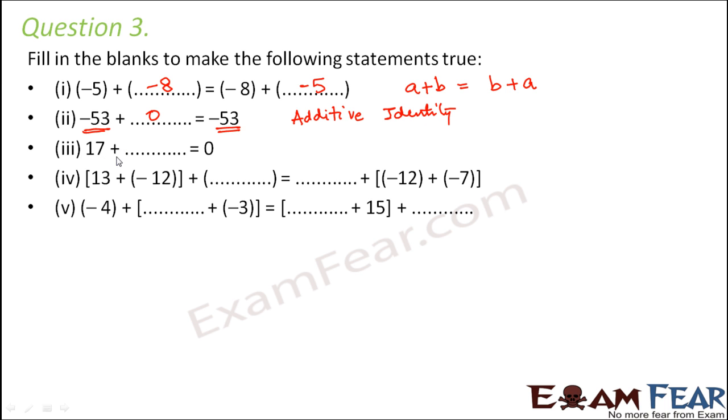17 plus dash is equal to 0. Now, which is that number which when added to a number always gives 0? That is nothing but additive inverse. And how do we find additive inverse? It is just the negative of the same number. So 17 plus minus 17 will give you 0.